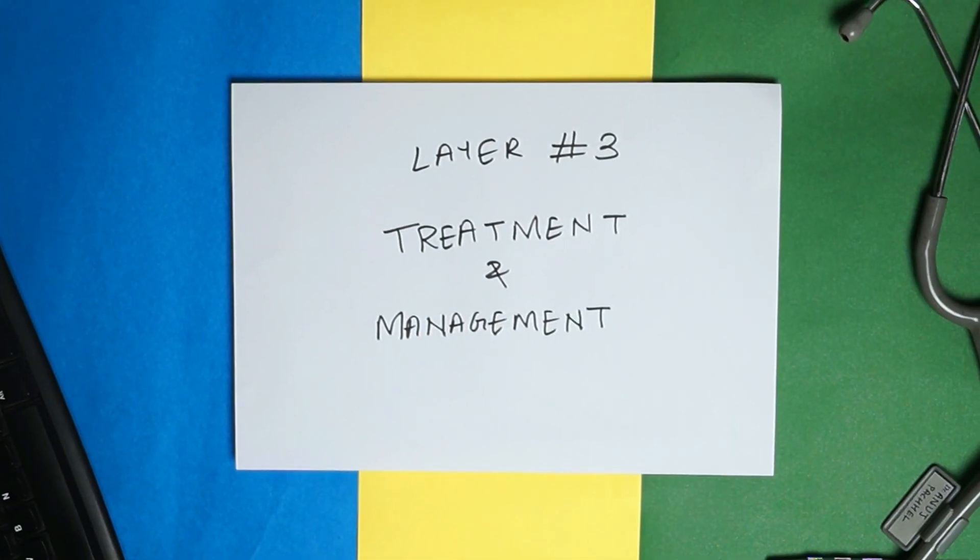Now comes the third layer, which is usually about the treatment and management of any given condition. When reading something like Robbins or a pathology textbook, you'll find the treatment part is given in a very short paragraph. So the best way — even if you're a second-year student — is to refer to the medicine textbook for treatment and management. Read what you understand. Once you have the first layer of physiology, the second layer of understanding what's wrong, and the third layer of how to treat it, you're already in the mindset of knowing a topic very well.